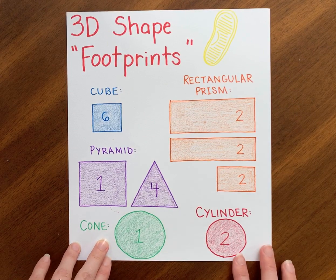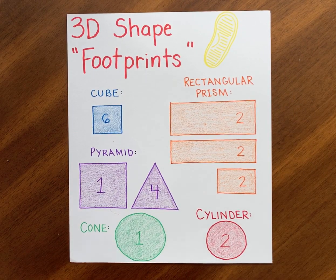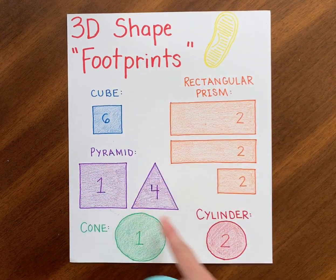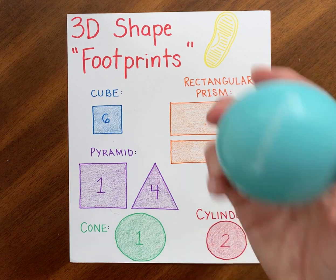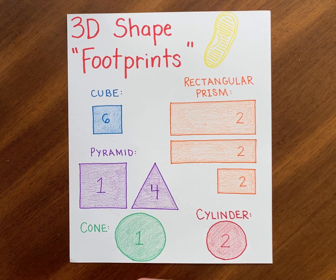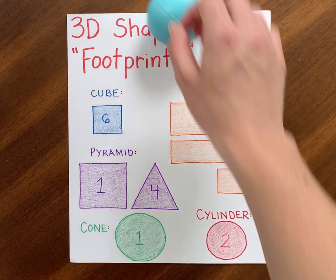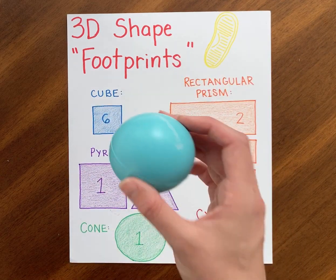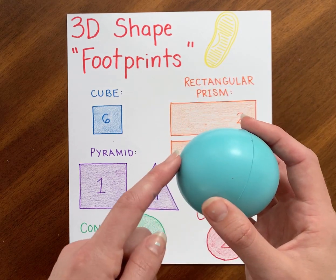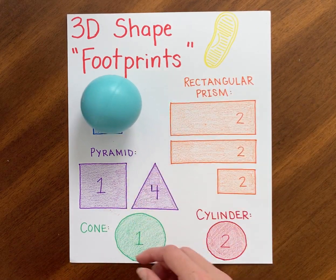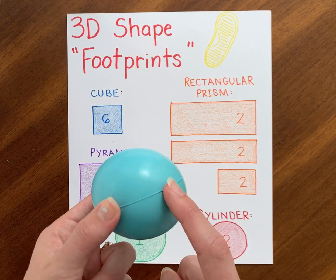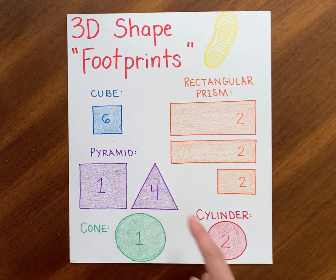We still haven't talked about one of my favorite 3D objects, which is a sphere. Why don't we have a sphere on here? What would happen if I tried to trace just the bottom of the sphere, just where it touched the paper? Well, first of all, it rolls around, so it doesn't actually have a face. Second, it only touches the paper at a tiny spot on the bottom when it does stay still — that's not really a footprint. So since a sphere does not have a face, we do not have a footprint for a sphere.